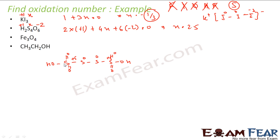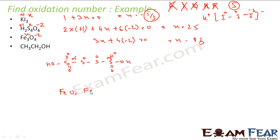Similarly, for Fe3O4, let's apply the formula. Oxygen becomes minus 2, iron is x. So: 3x + 4(−2) = 0, giving x = 8/3. To understand the structure: Fe3O4 can be seen as FeO · Fe2O3. In FeO, iron has plus 2 oxidation state; in Fe2O3, it has plus 3. The average is (2×3 + 1×2) / 3 = (6 + 2) / 3 = 8/3.